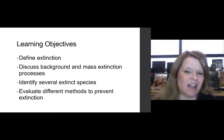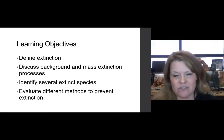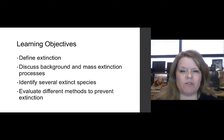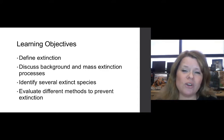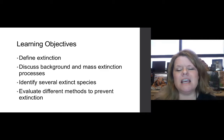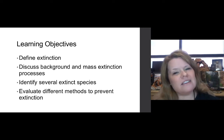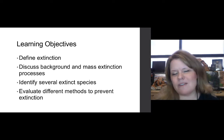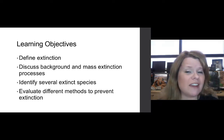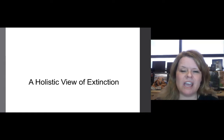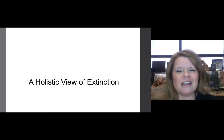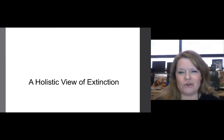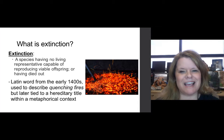We're going to define what an extinction is and what it's not, and we'll give you some background information on how mass extinctions have occurred in the geologic past. We'll look at some case studies of already extinct species and what led to their issues, and evaluate several different methods of preventing extinctions in our world. So taking a holistic view of extinction — what exactly does that mean?